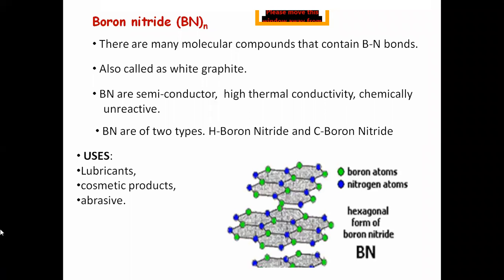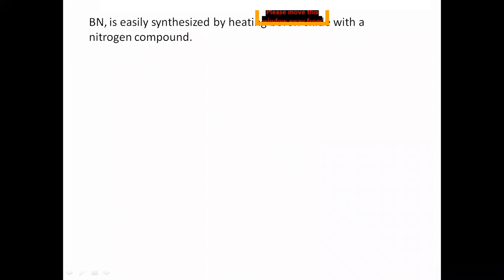Here is the structure of boron nitrides. The green colored atoms are boron atoms and blue colored are nitrogen atoms. Like graphite, they also form a hexagonal structure. From that you can imagine these boron nitrides are similar to graphite.